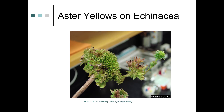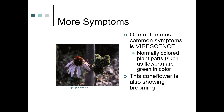Here are some symptoms of aster yellows on echinacea. One of the most common symptoms is virescence — normally colored plant parts such as flowers turn green. So this coneflower has that, and it's also showing brooming.